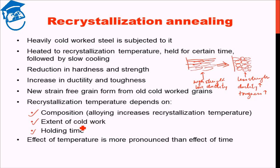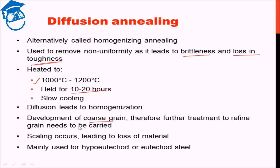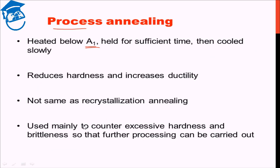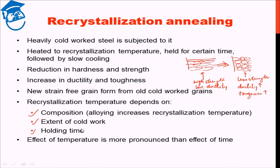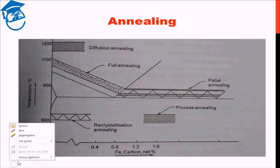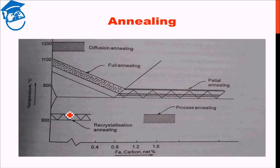So today's lecture — what we saw is: we started with diffusion annealing, which is basically to remove heterogeneity and make the material homogeneous, carried out at a really high temperature. We discussed process annealing, which is an intermediate step so as to recover ductility, thereby allowing the material to have further deformation. And recrystallization annealing is basically applied on cold worked materials — if we give it sufficient temperature and time, strain-free grains are produced out of highly strained cold worked grains.